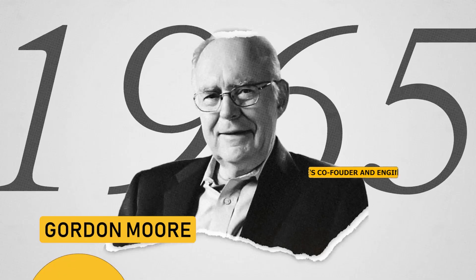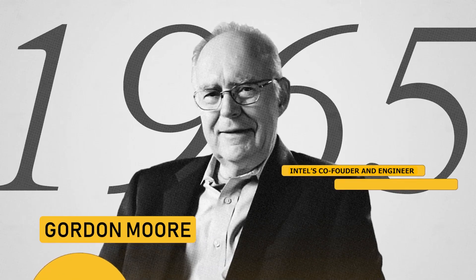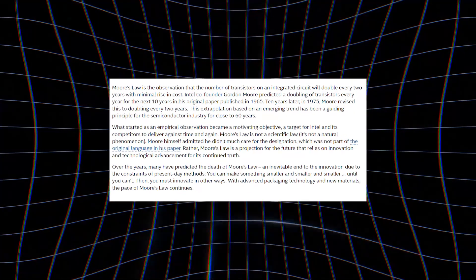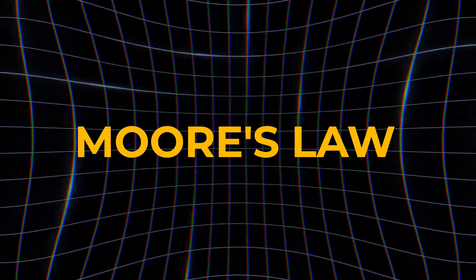In 1965, the engineer and co-founder of the company Intel, Gordon Moore, made a prediction in an interview for an electronics magazine. The prediction made by Moore went down in history and became known as Moore's Law.